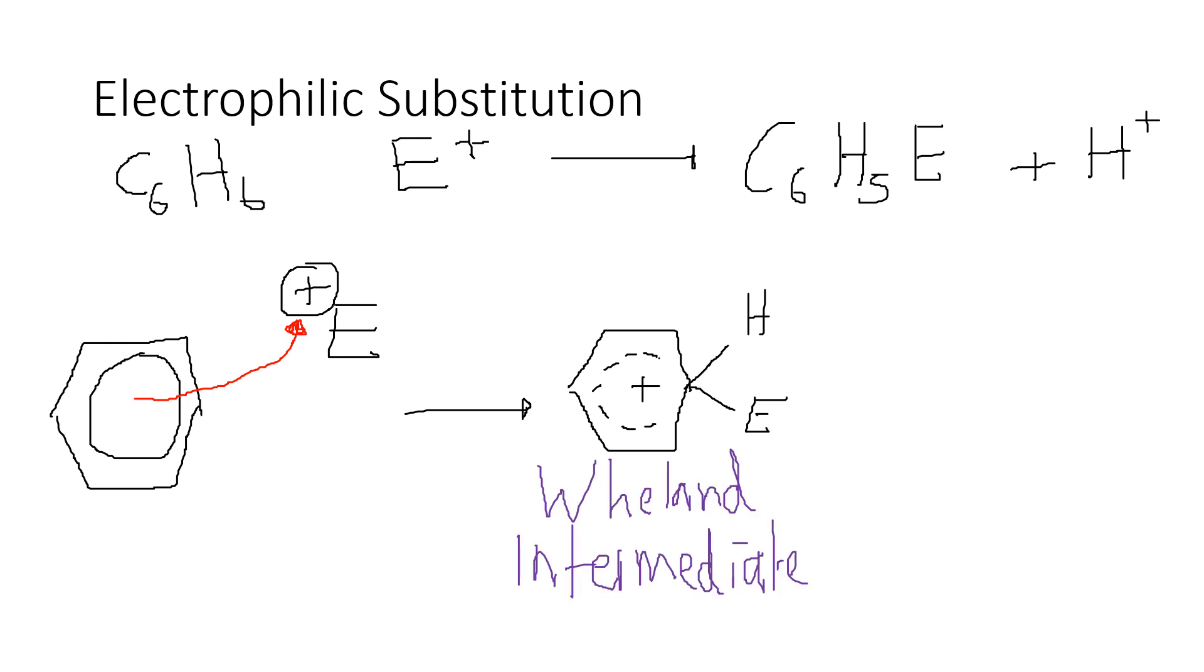Now this is actually relatively difficult to do, because the pi cloud is very, very stable. It makes benzene very stable. So this requires quite a bit of energy to break this pi cloud. So your electrophile needs to be very, very reactive. And we'll look at that in the next stage. And the only reason that benzene undergoes substitution reactions is because in the second stage of the mechanism, this carbon to hydrogen bond that is shown on the diagram breaks and pushes electrons back in to the ring and reforms the pi cloud.